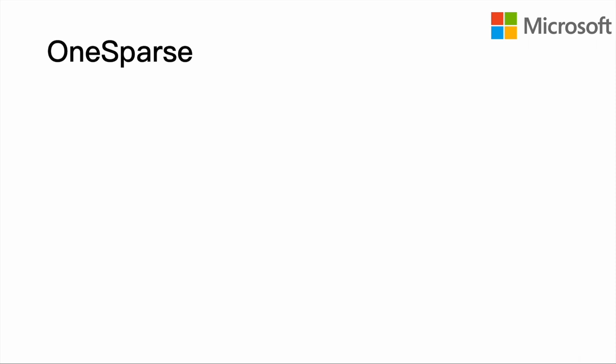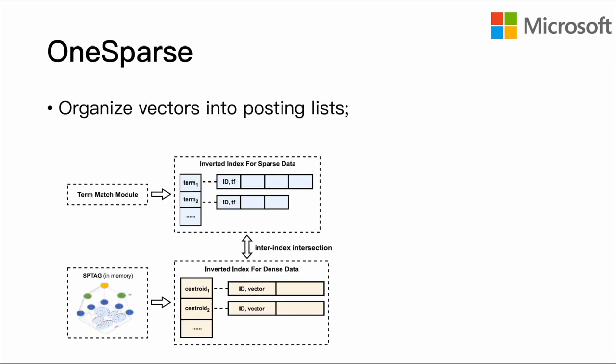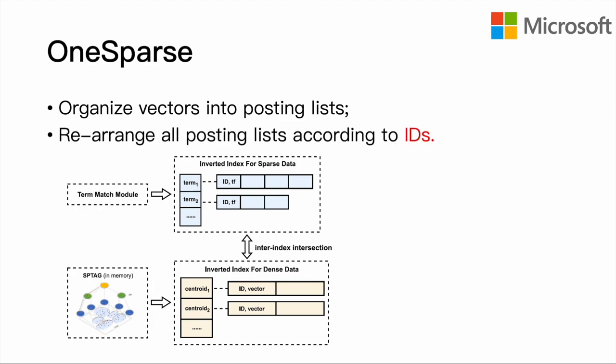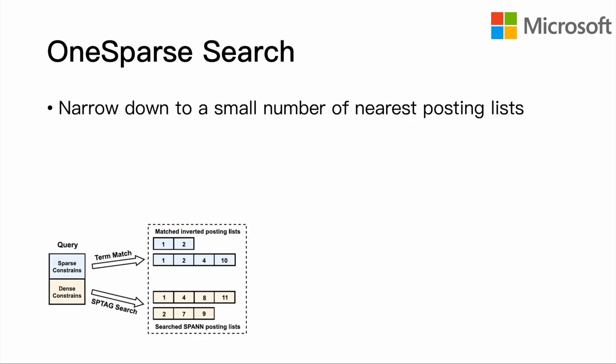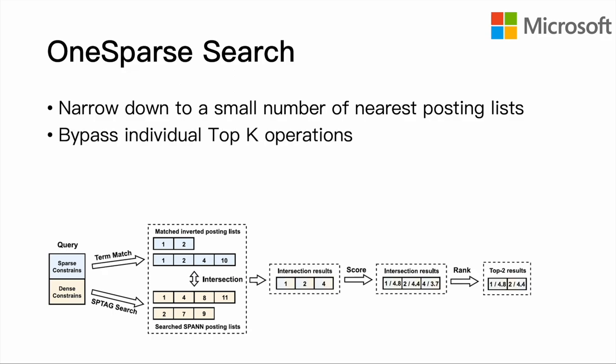To overcome these shortcomings, we propose OneSparse. We organize both sparse and dense vectors into posting lists and rearrange all posting lists according to IDs. During search, it firstly narrows down to a small number of nearest posting lists. Then, during the fine-grain traversal in candidate lists, thanks to each posting list being ordered by IDs, when one index scans to a certain ID, score calculations for candidates smaller than this ID in the other index can be skipped.